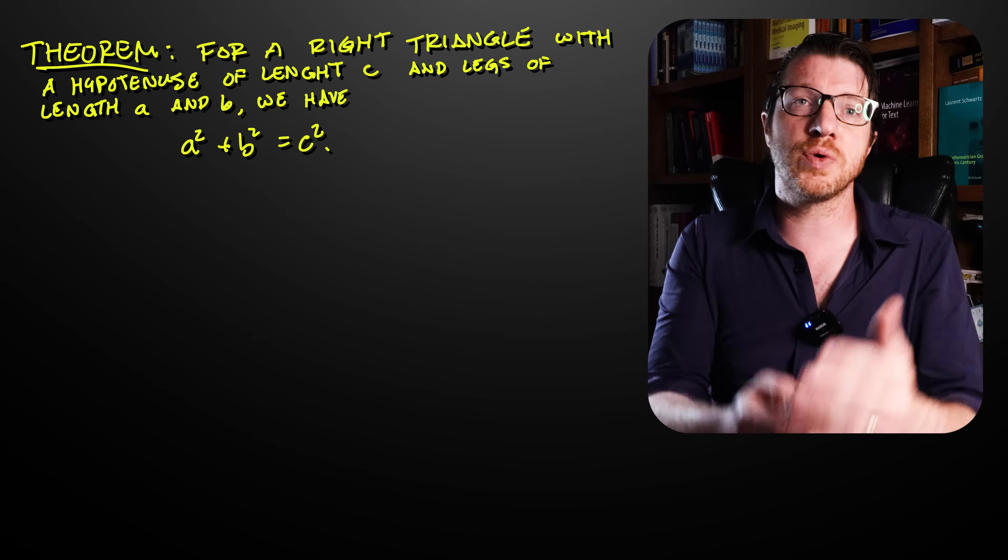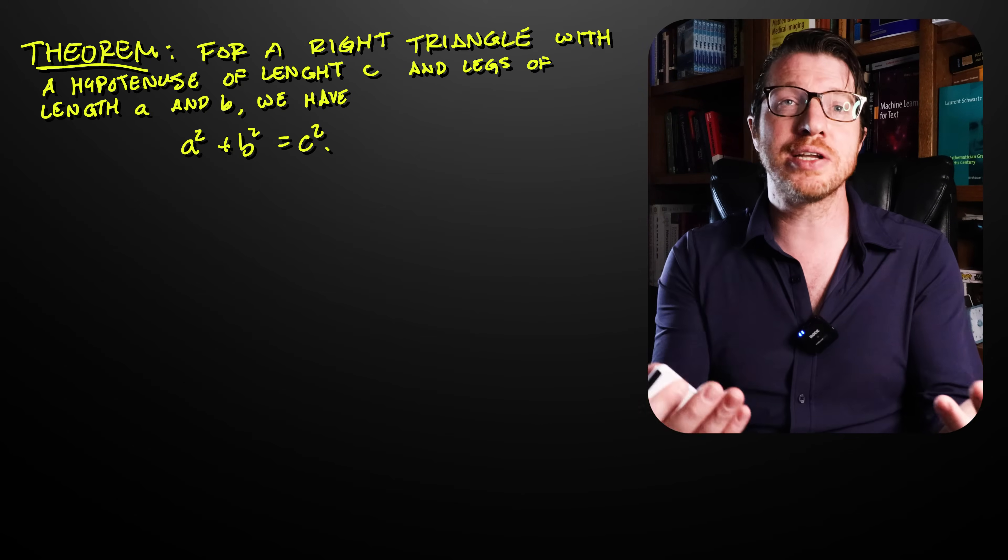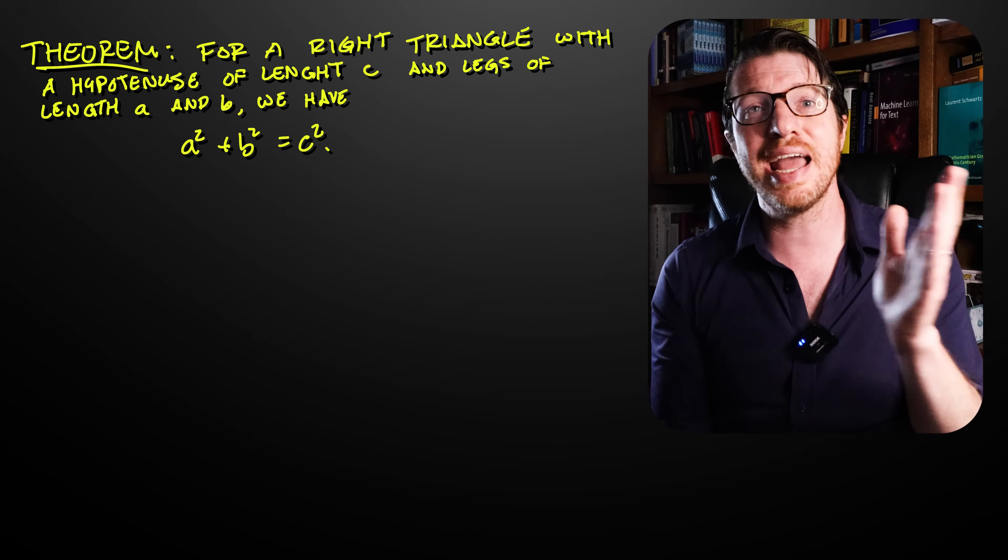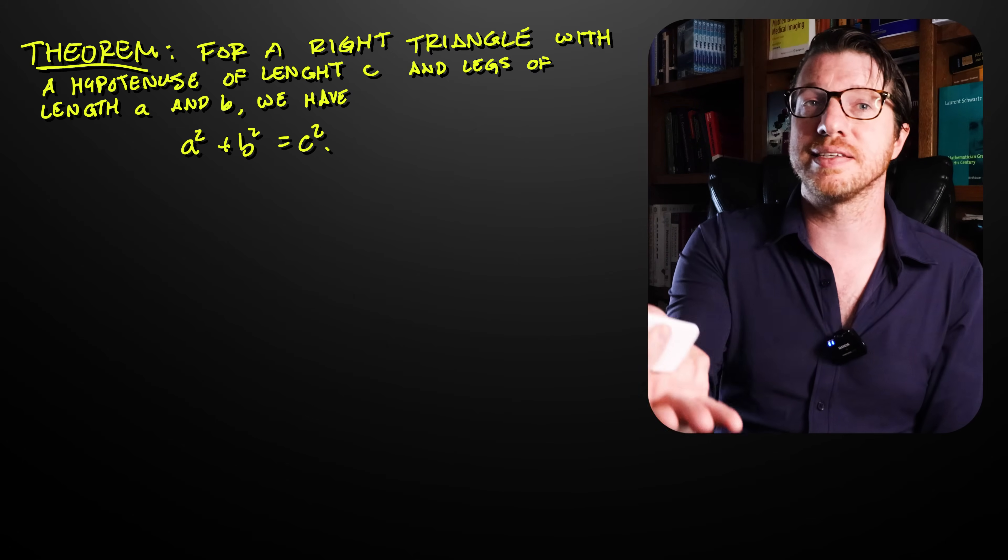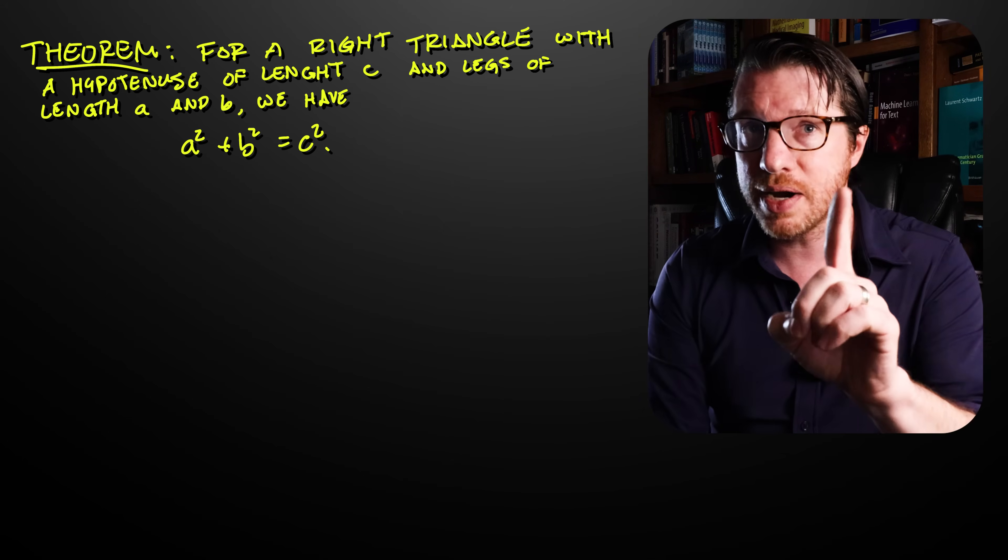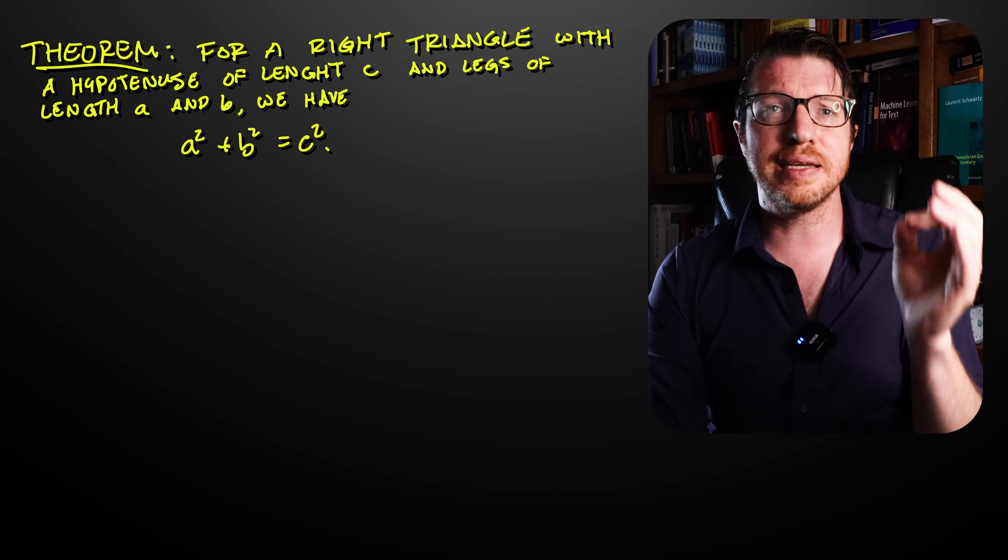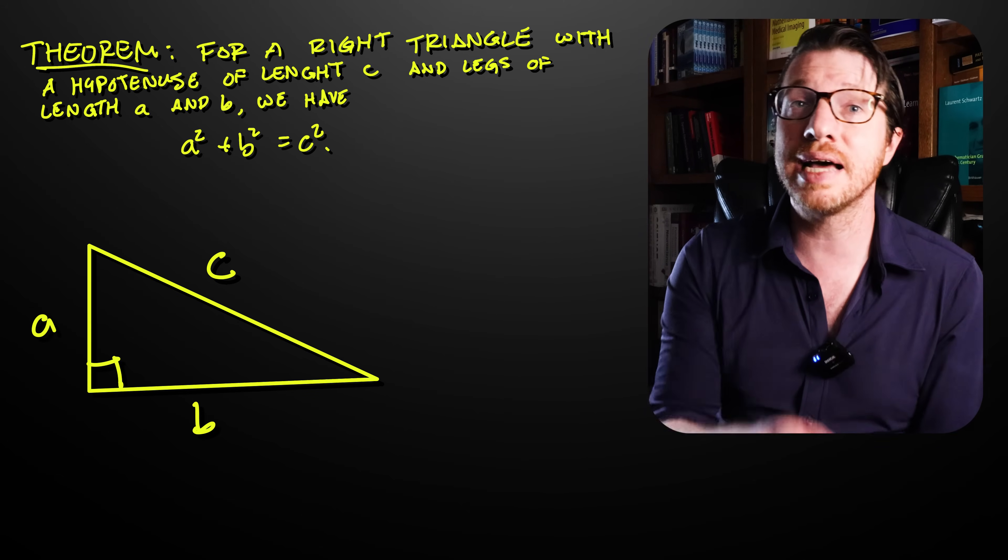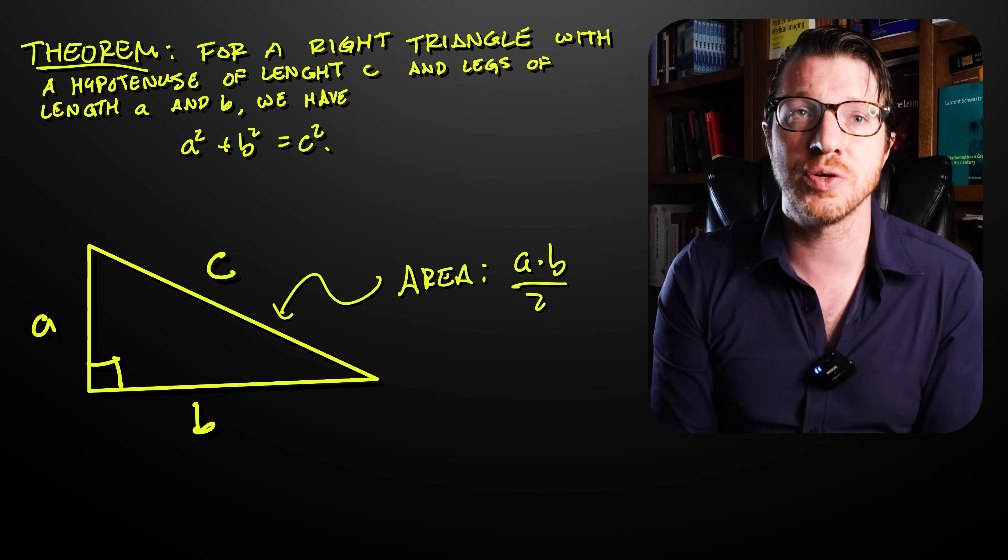But before we do that, let's look at a typical proof of the Pythagorean theorem. This won't take long. It's actually much simpler than Johnson and Jackson's proof. We want to prove a squared plus b squared is equal c squared for a right triangle with two legs of length a and b and a hypotenuse of length c. Very naturally, when we see squares here, we frequently think of areas. So let's look at the area of the triangle. And that's going to be a times b divided by 2.